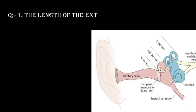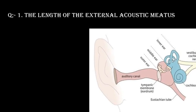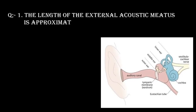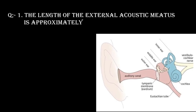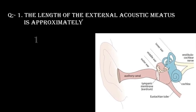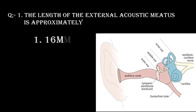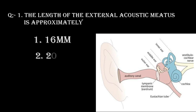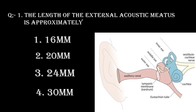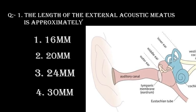Question number 1. The length of the external acoustic meatus is approximately. Option 1: 16 mm. Option 2: 20 mm. Option 3: 24 mm. Option 4: 30 mm.